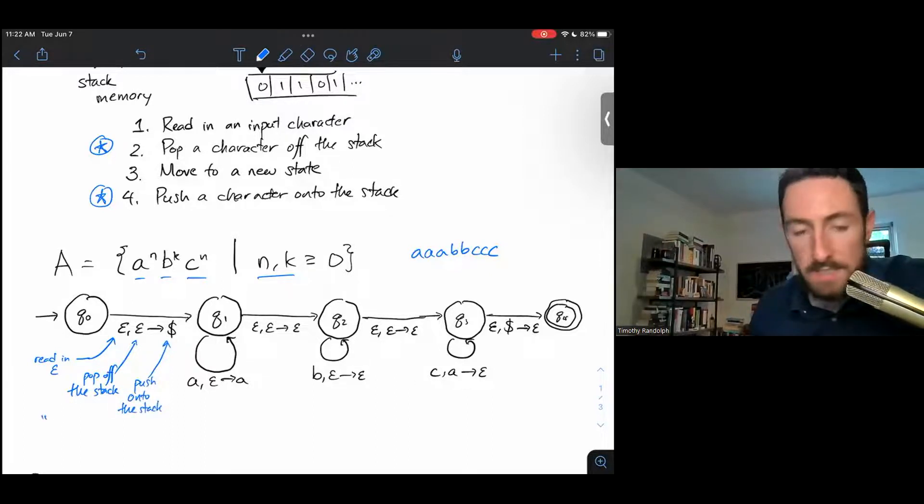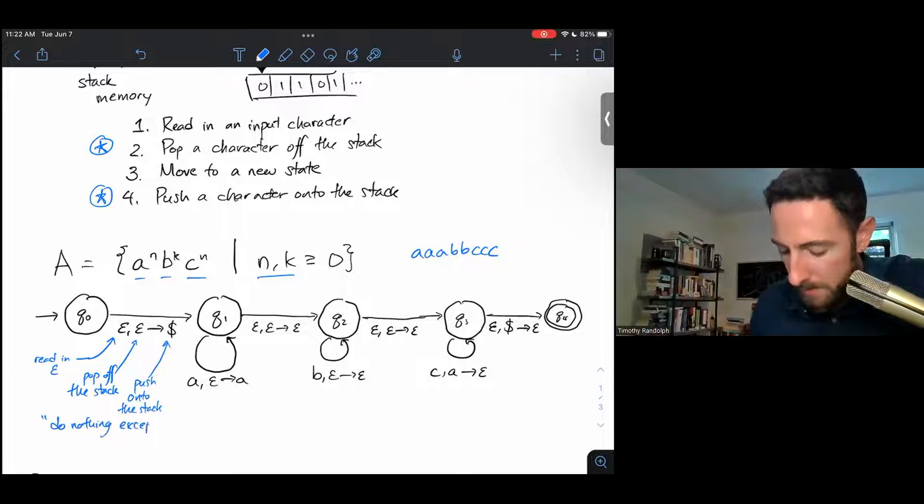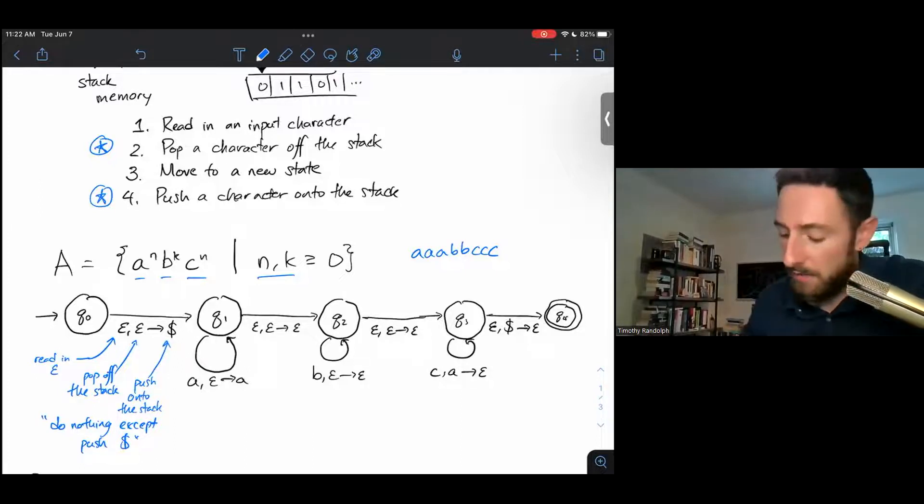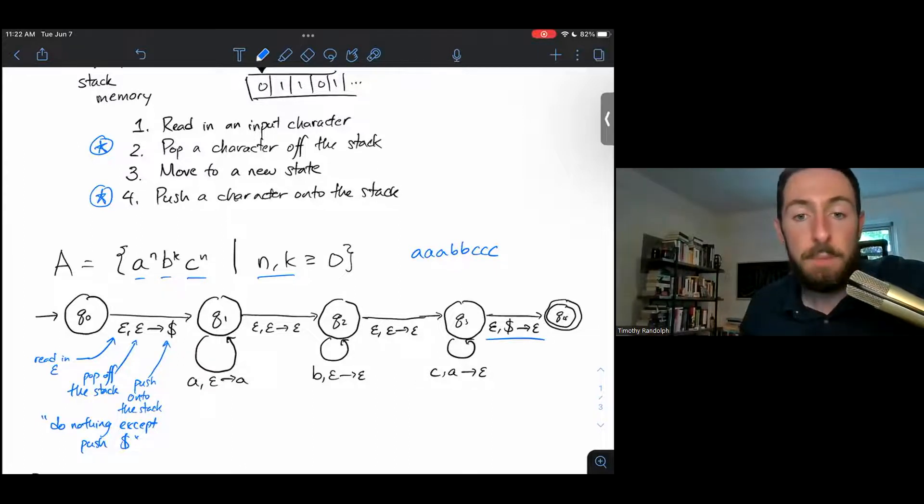So we can gloss this transition as do nothing except push this dollar sign. You might think it's weird to push a dollar sign when we're just talking about A's, B's, and C's in our input string, but this is actually a pretty common tactic. The dollar sign will serve as our marker for the bottom of the stack. When we get to the bottom of the stack at the very end, once we're back down to an empty stack with just a dollar sign, we can pop off that dollar sign. That is reading nothing, pop the dollar sign, push nothing. And that will tell us we are done. We've popped off all of the information that we added over the course of our computation. So the dollar sign is the bottom of the stack marker.